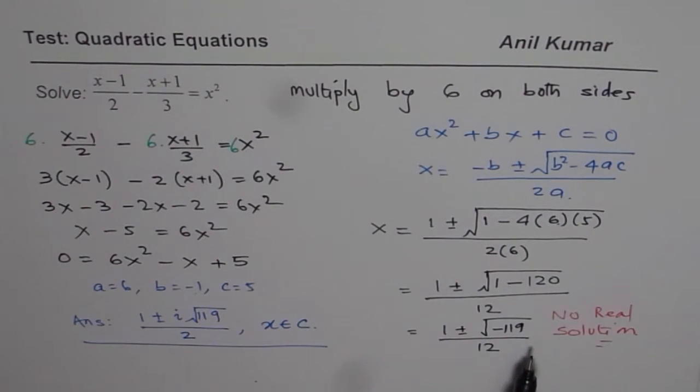But if you are working with real numbers, then it does not have any solution, since b² - 4ac is less than 0, it's negative. So that is how you could solve this quadratic equation. I hope that helps. Thank you and all the best.